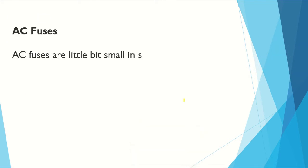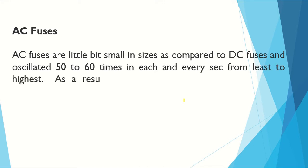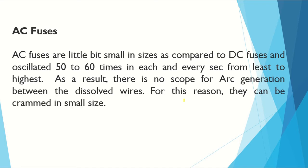AC fuses are a little bit smaller in size compared to DC fuses. AC fuses oscillate 50 to 60 times every second from least to highest value. As a result, there is no scope for arc generation between the dissolved terminals. For this reason, they can be made in a smaller size.